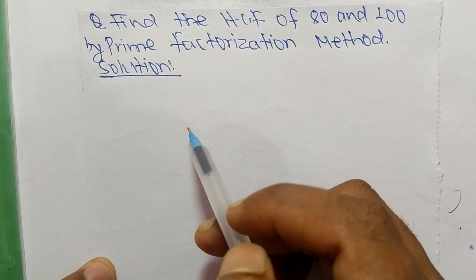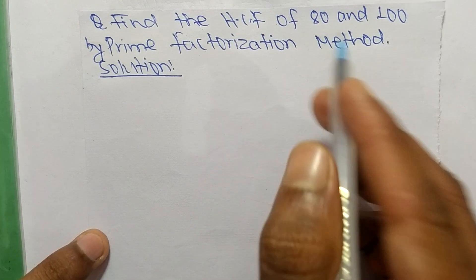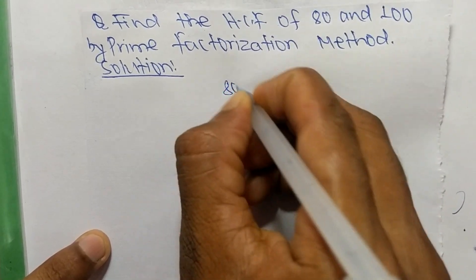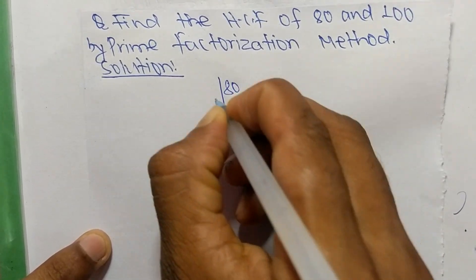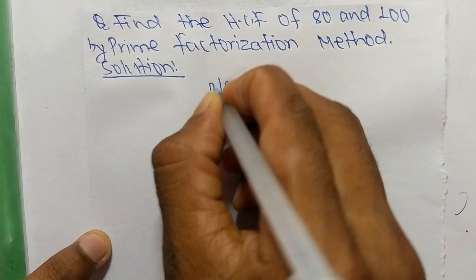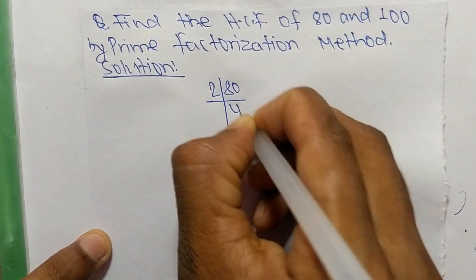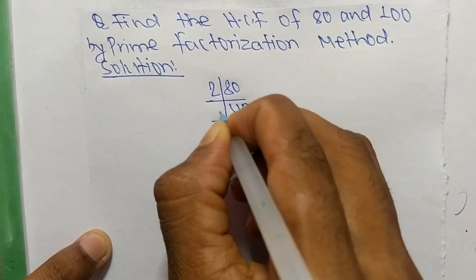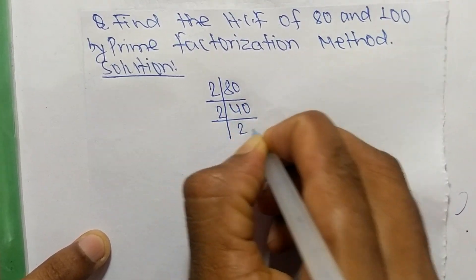First we find out the prime factors of 80. So it is 2 times 40 makes 80, 2 times 20 makes 40.